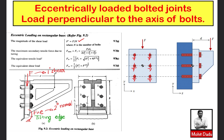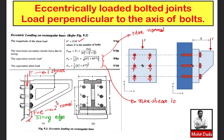Since primary load is shear and secondary load is tensile (normal), you can convert them into either resultant tensile or resultant shear using maximum principal stress theory or maximum shear stress theory respectively. There is a correction in the data book equation: in the shear load expression, the term should be 4f'² instead of f'².